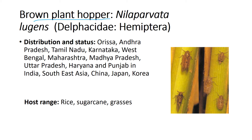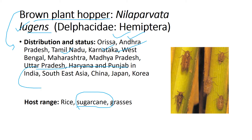The biological name is Nilaparvata lugens. For distribution, the entire South India is covered — Tamil Nadu, Karnataka, Andhra Pradesh, Odisha, West Bengal — all major rice producing states are affected by BPH. In some cases where sugarcane is growing, such as Uttar Pradesh, Haryana, and Punjab, BPH also affects rice as well as sugarcane.